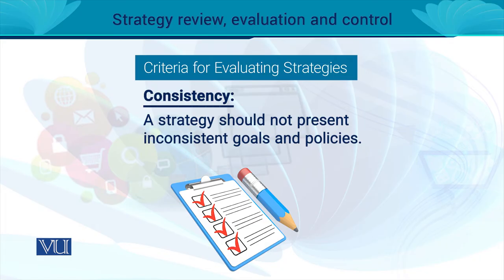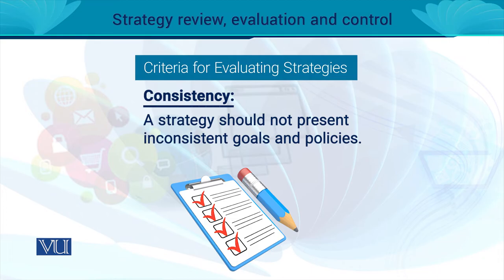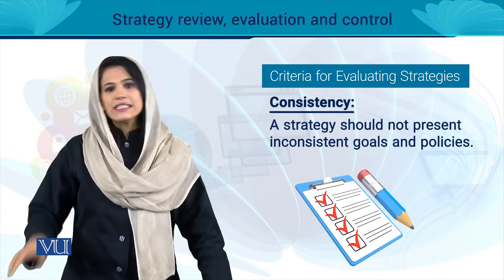अगर आपको किसी strategy को re-evaluate और revisit करना है जो desired results नहीं दे रही, तो standard criteria पर उसको revisit करें। सबसे पहले आती है consistency। आपकी जो भी strategy आपने adopt की है - चाहे cost पर focus हो, product design पर, या market penetration पर - वो consistent होनी चाहिए आपके goals, missions, objectives के साथ। आपने जो भी policy बनाई है इन सब को aligned होना चाहिए।